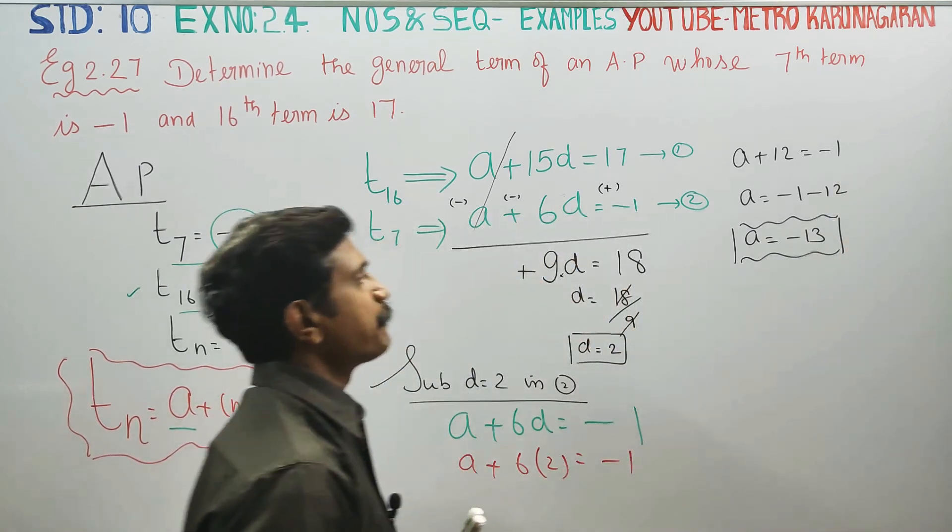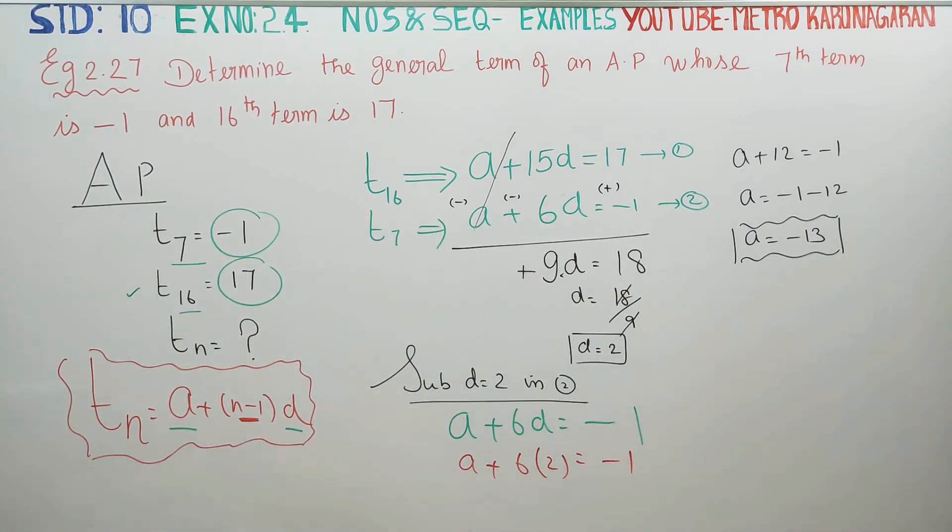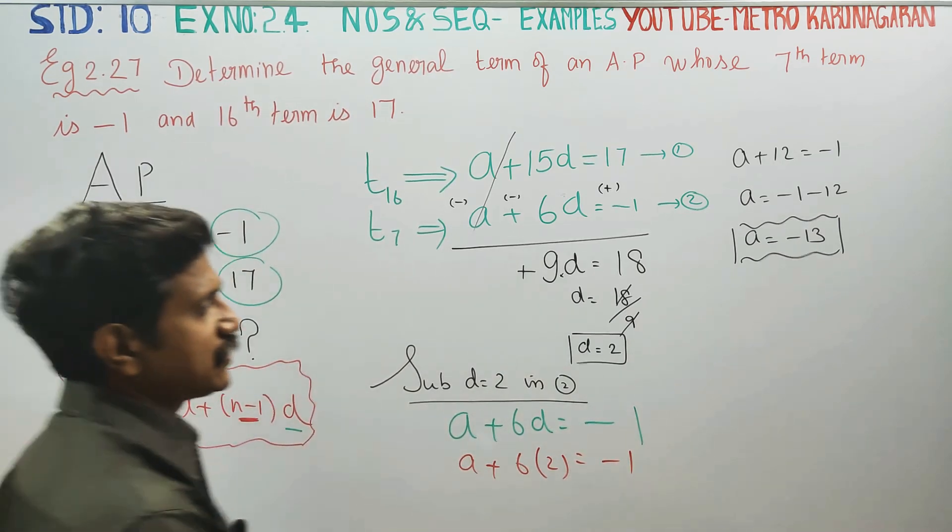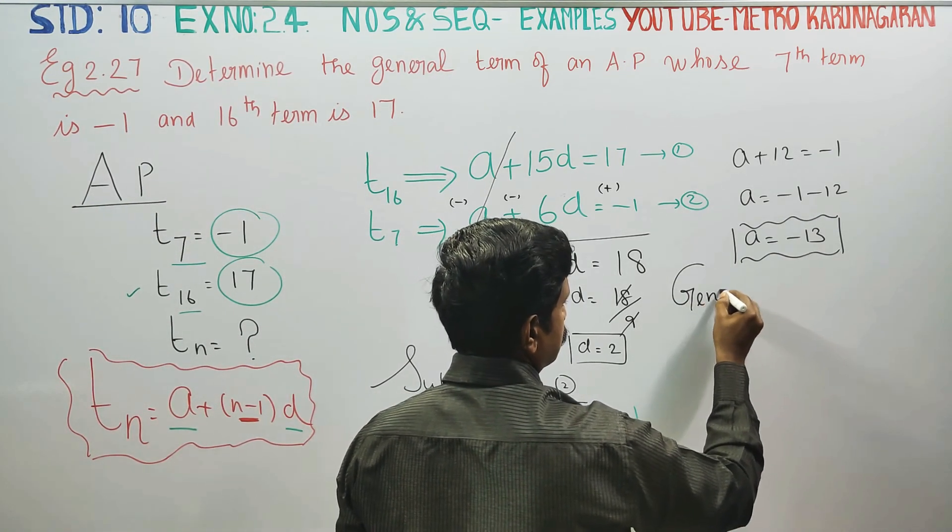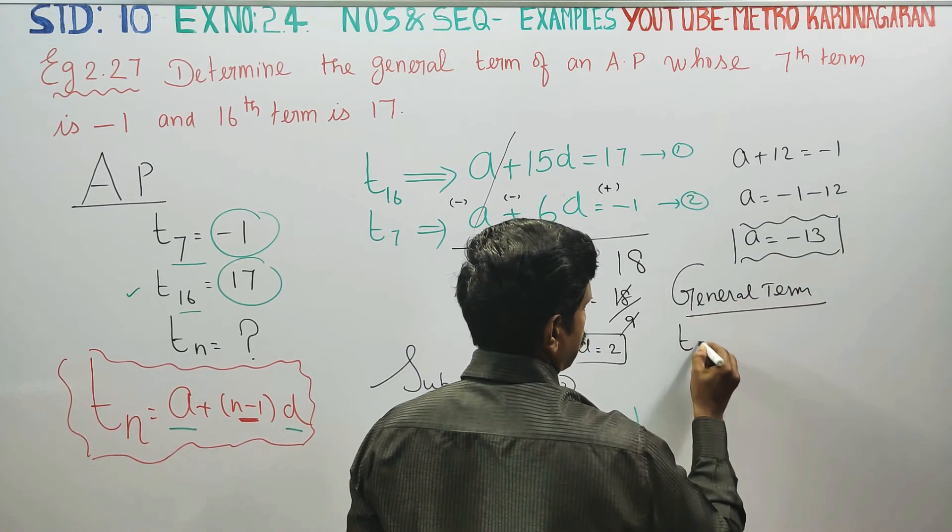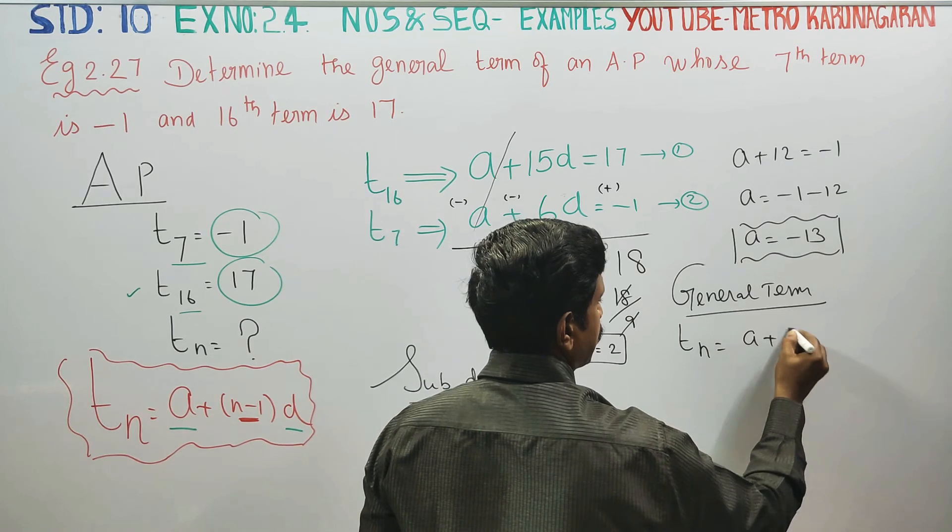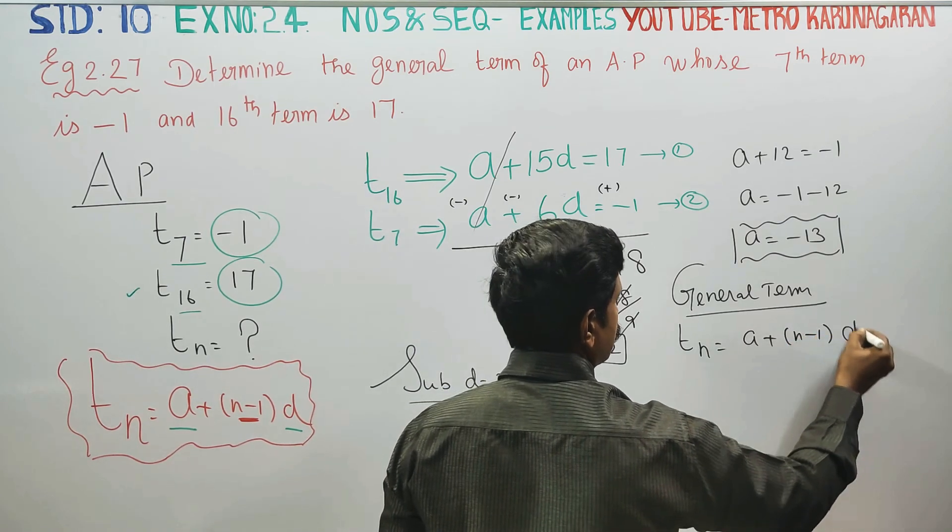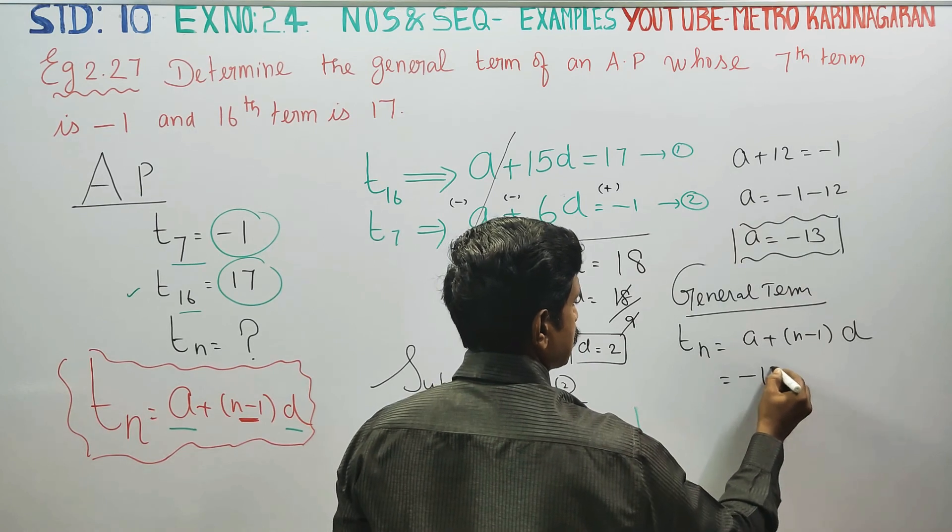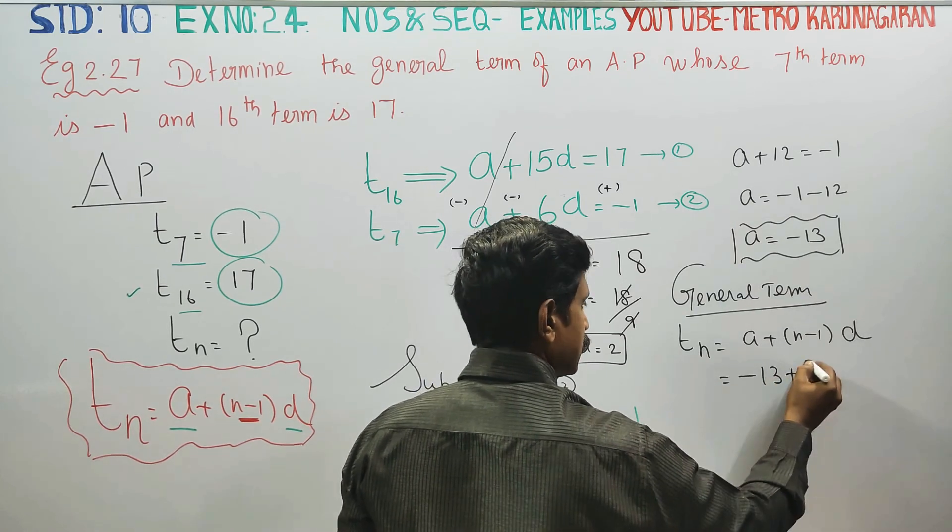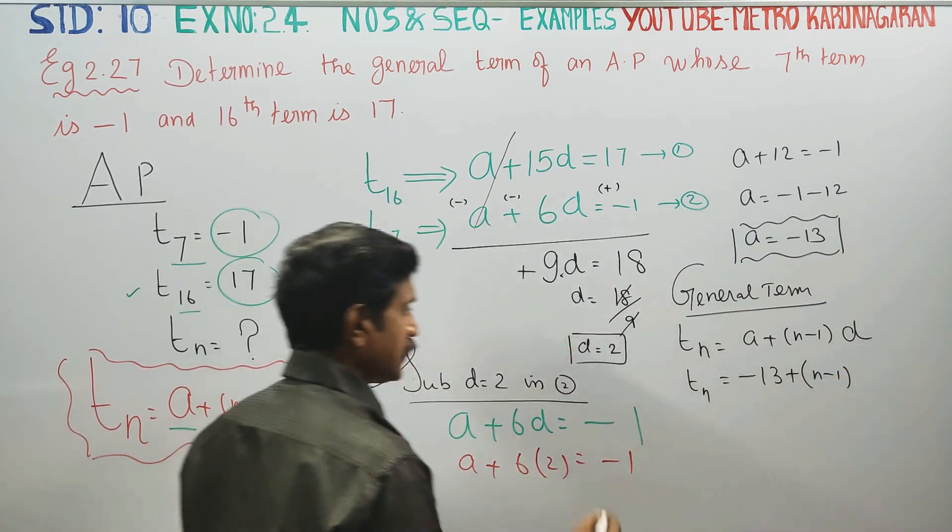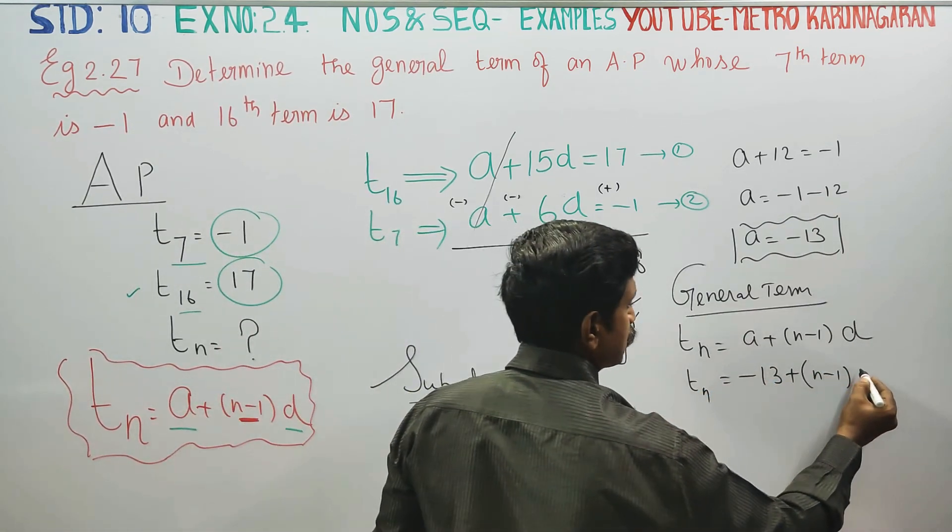After finding A, we have to find the general term. General term formula TN is equal to A plus N minus 1 into D. A is minus 13, N minus 1, D is 2.